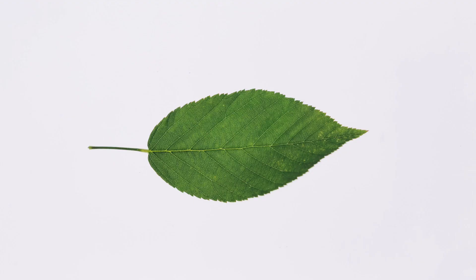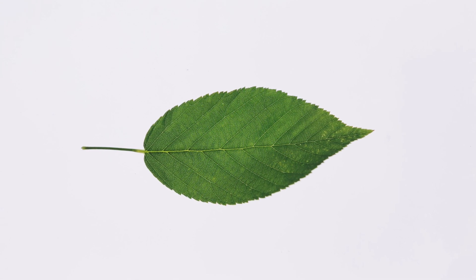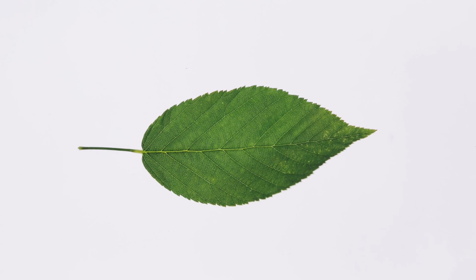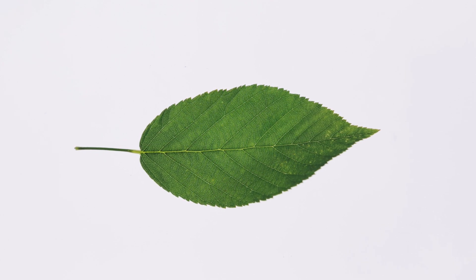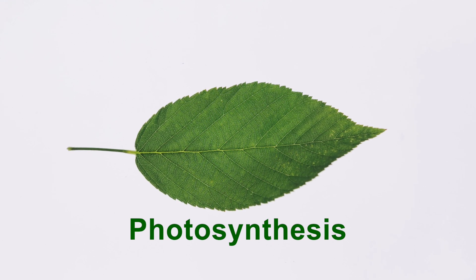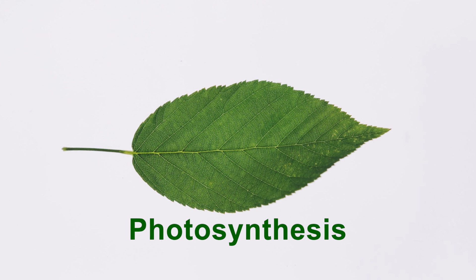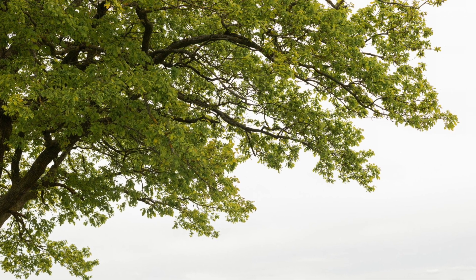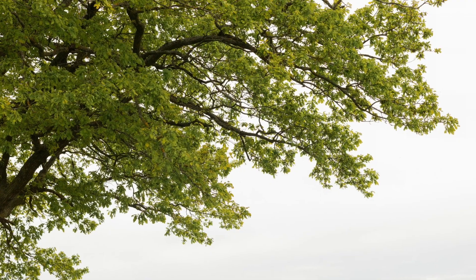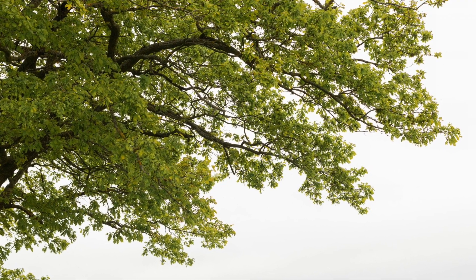The green pigment in leaves called chlorophyll turns sunlight into food. This process of making food is called photosynthesis. Can you say photosynthesis? During spring and summer, plants do lots of photosynthesis because they get a lot of sunlight and warm weather.